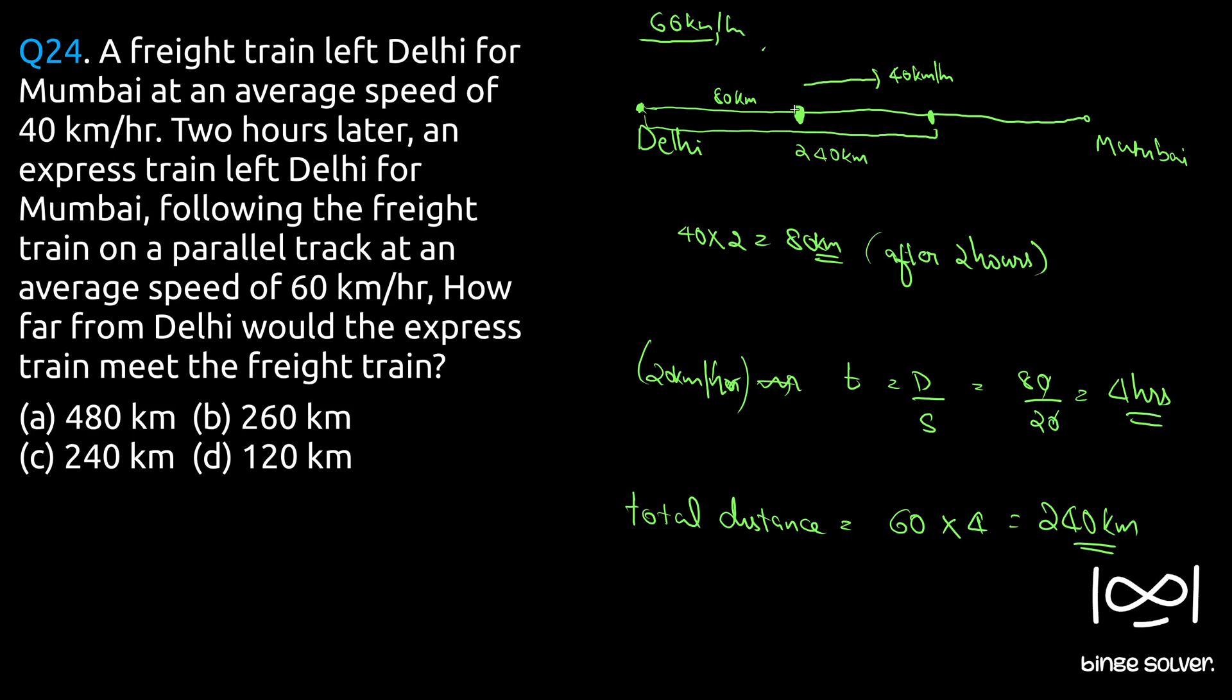So from Delhi by the time they catch up they have covered 240 km, or we could say four hours from this point the freight train has traveled, so 40 times 4, so 40 times 4 is 160 km. So 160 plus 80 is nothing but 240. So we can calculate in that manner also.